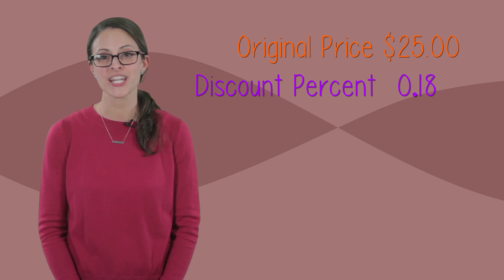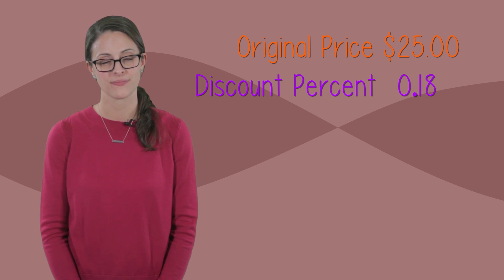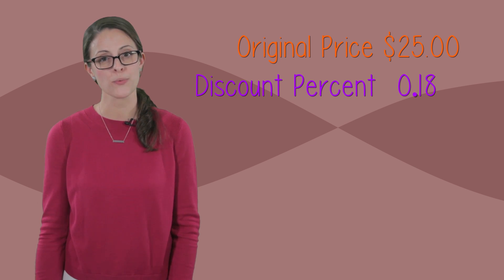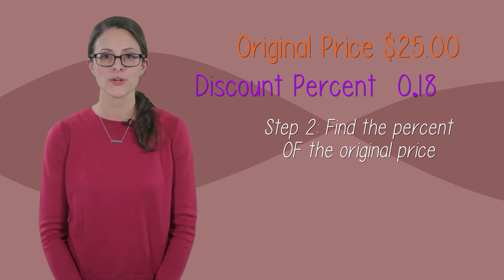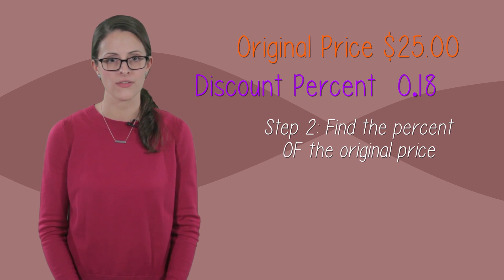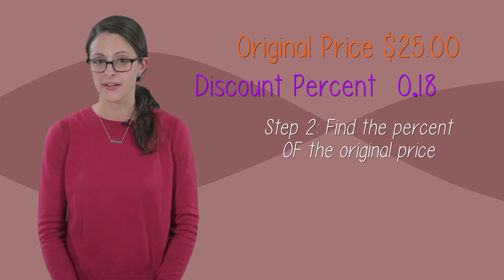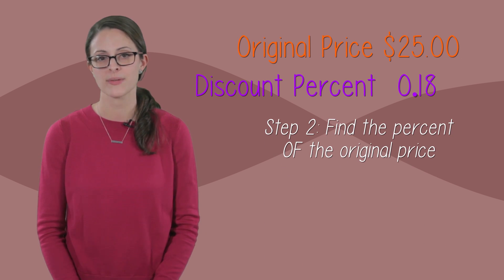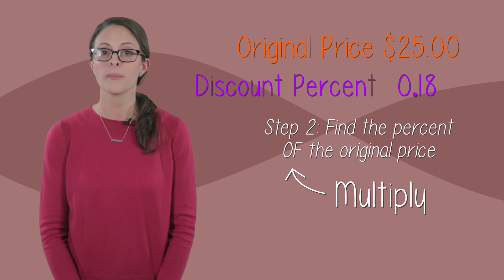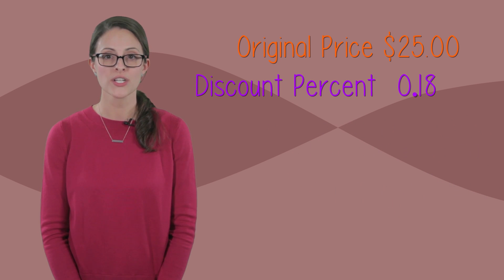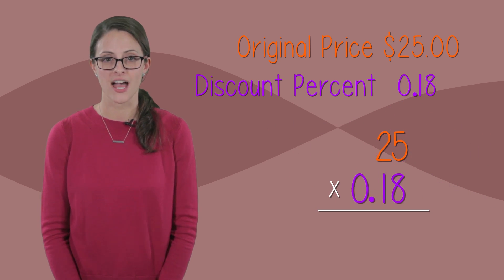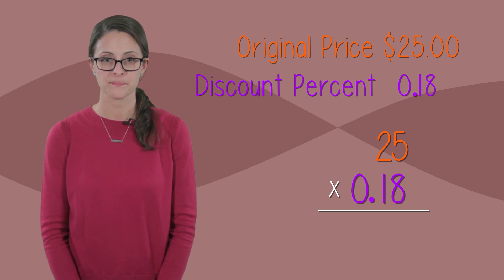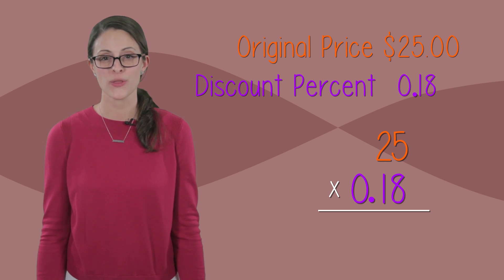Now we can use this to find our discount. The original price is $25. Since we are finding the percent of the original price, remember that "of" means to multiply. So we will multiply our original price, $25, by our discount as a decimal, 18 hundredths. And now we do the work.